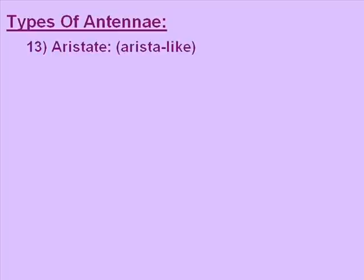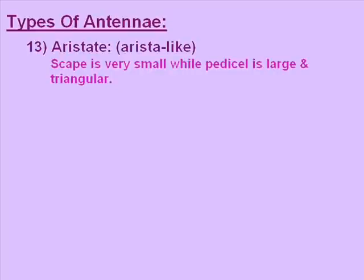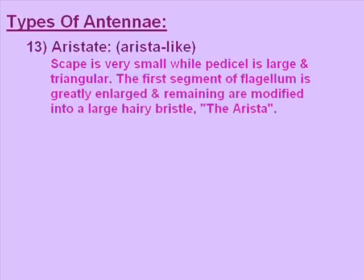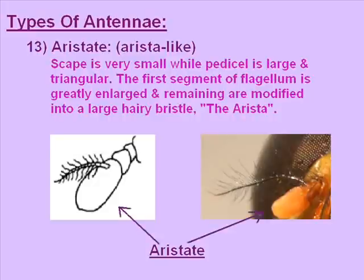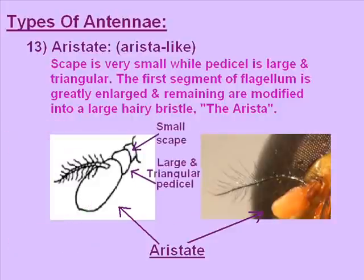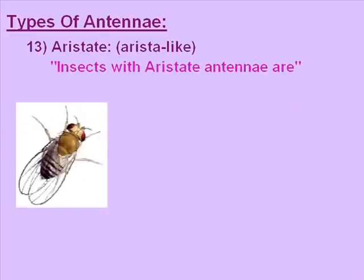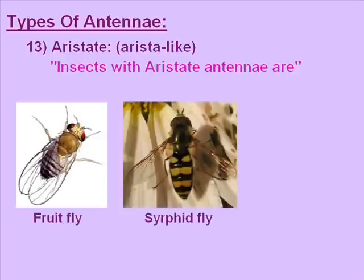The thirteenth type is aristate antenna, meaning arista-like. Here the scape is also discussed separately because it is different: the scape is very small, the pedicel is large and triangular, the first segment of the flagellum is greatly enlarged, and the remaining are modified into a large hairy bristle called the arista. The pictures show the aristate antenna. Insects with aristate antennae are fruit flies, hoverflies, and the common house fly.